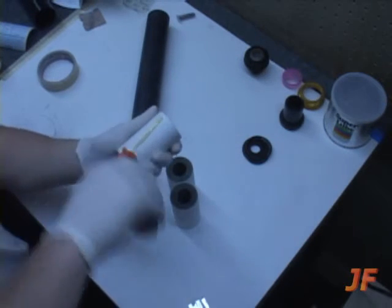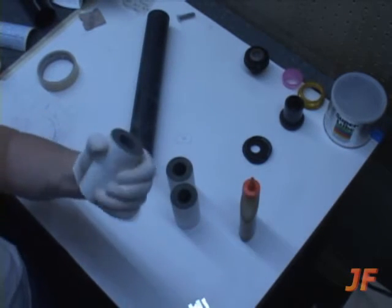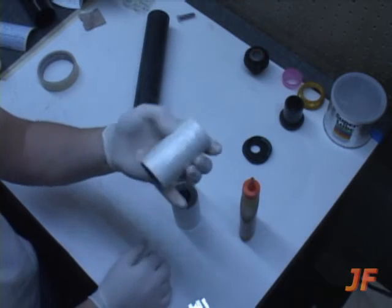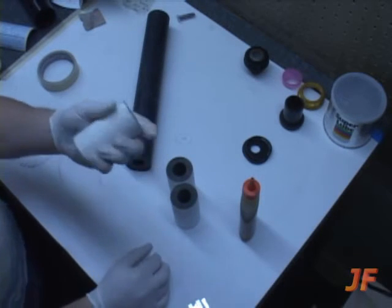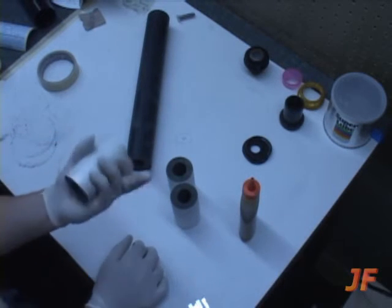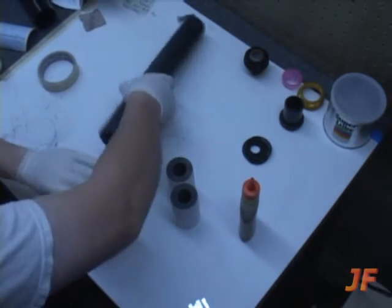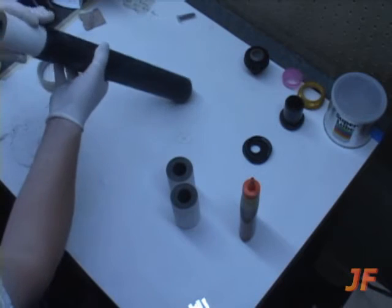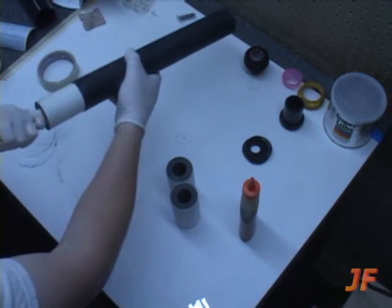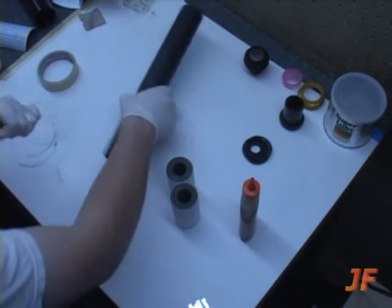Grab the second grain. Same thing. Just kind of spinning it around in my hand. Evenly coating the outer, you know the entire outside of the grain. Not a lot is getting on the face of the grain, so we should be good. Second grain.